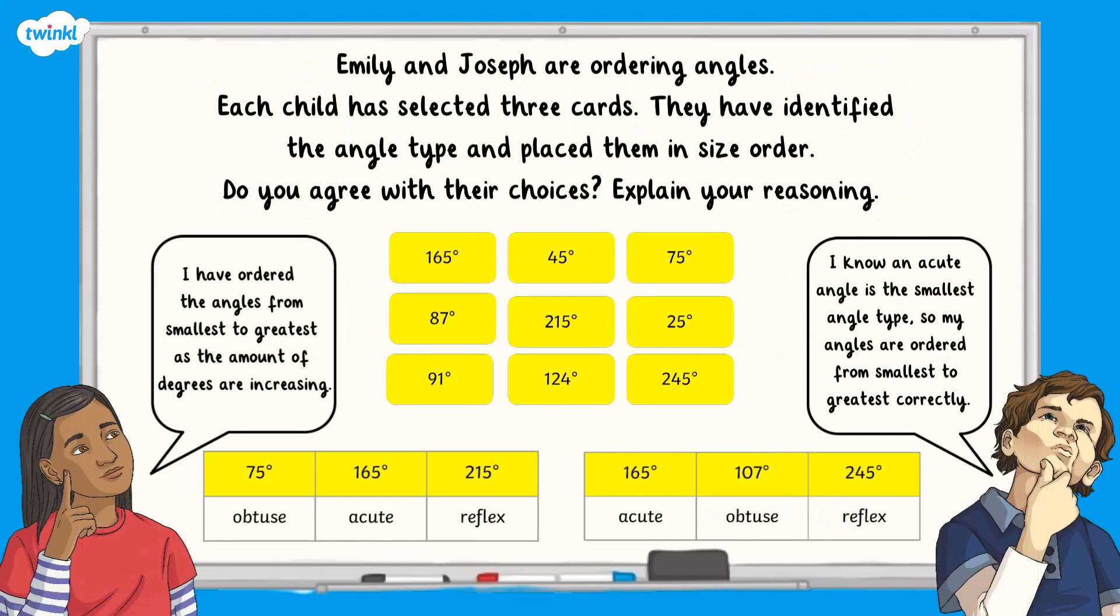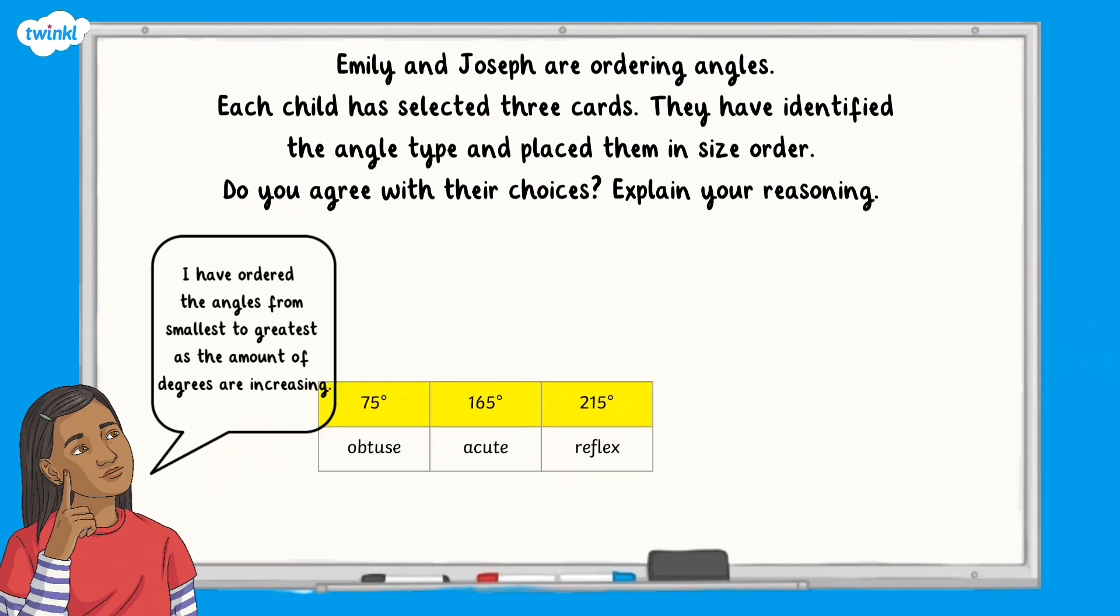Let's see if we can apply our learning about angle facts to a challenge question. Emily and Joseph are ordering angles. Each child has selected three cards. They have identified the angle type and placed them in size order. Do you agree with our choices? Explain your reasoning. Have you finished? Here are your answers.